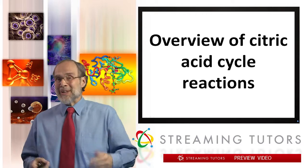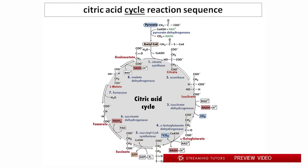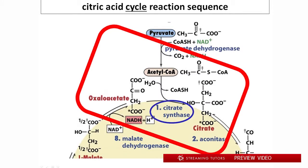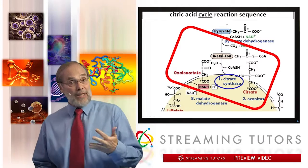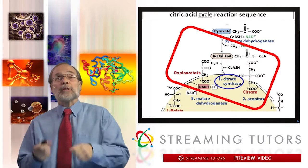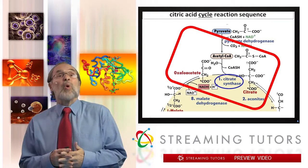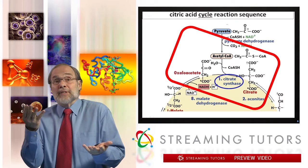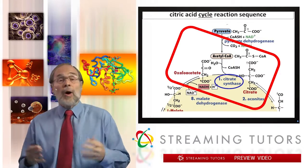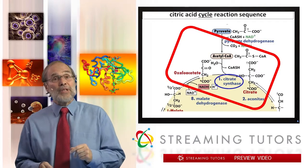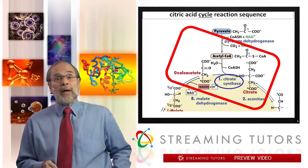Here again is this big overview of the TCA cycle — the citric acid cycle. The first reaction is catalyzed by citrate synthase. We're taking acetyl-CoA from pyruvate dehydrogenase or another source such as fatty acid degradation, and combining it with oxaloacetate — the tail end of this 360-degree cycle — through citrate synthase to make citrate. We're taking a two-carbon compound and a four-carbon compound, joining them to make the six-carbon compound citrate, which we'll then burn back down to four carbons, releasing two CO2s in the process to complete the cycle.